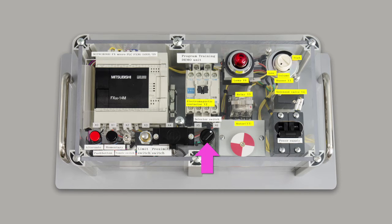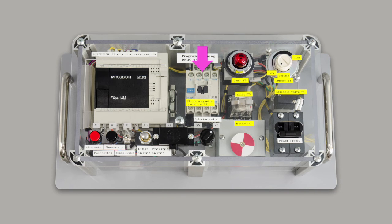The output devices are assigned as Y0, a red lamp. Y1, a buzzer. Y2, a magnetic contactor. Y3, a motor. And Y4, a solenoid valve.